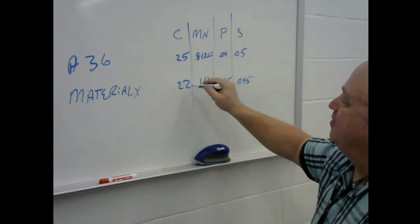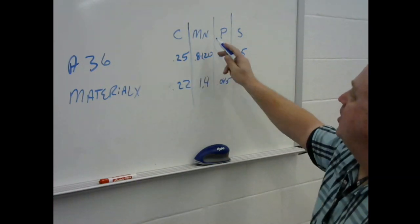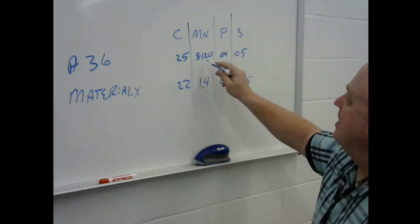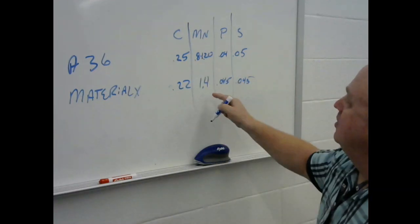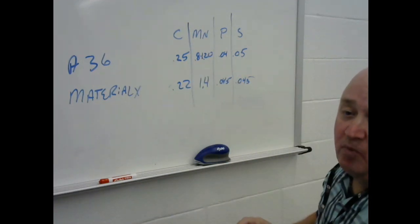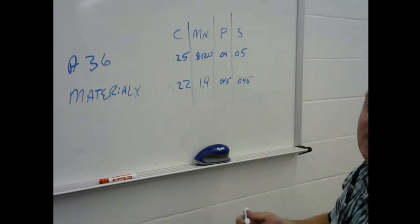So, all right, 2.5, carbon, whatever, it's pretty similar. It's not going to affect our weldability. Manganese, A36 says the max we can have is 1.2. Material X, let's say, is 1.4. Or we have phosphoruses and everything lines up.